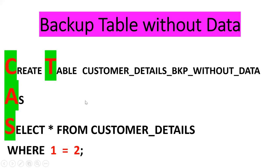Hope this is clear. If you want to get data, we don't put any filtering condition. If you want only the definition, we put one false condition — we can put either WHERE 1 = 2 or 1 = 3, any false condition.